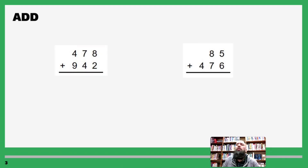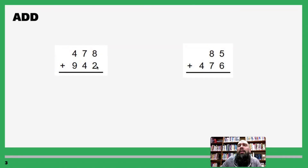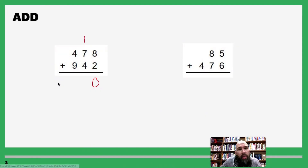But what if they're not as friendly? What if we go to the ones place value and we add them up and get something that's ten or bigger? Well, here's what we do: start at the ones place value — eight plus two is ten. That's two digits, so you write out the zero for ten and carry the one. Now we're at our tens: one plus seven is eight, eight plus four is twelve.